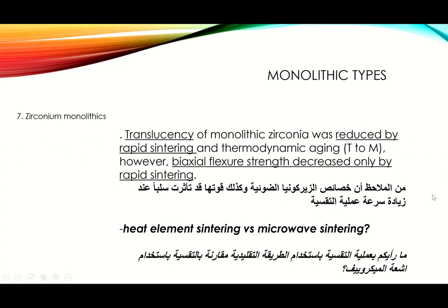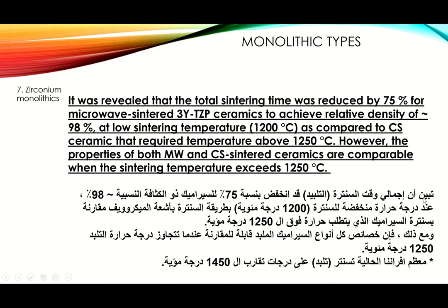Regarding heat sintering versus microwave sintering, one study revealed that total sintering time was reduced by 75% for microwave sintering of 3-yttria stabilized zirconia ceramics to achieve a relative density of 98% — but only at low sintering temperatures around 1200 to 1250°C. Instead of sintering for eight hours, microwave sintering takes approximately two hours.